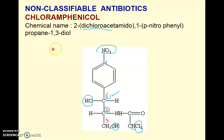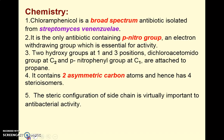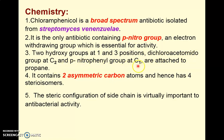Chloramphenicol is a broad-spectrum antibiotic isolated from Streptomyces venezuelae, which is its biological source obtained by fermentation. It is the only antibiotic containing a para-nitro group, which is an electron-withdrawing group essential for its antibacterial activity. It has two hydroxy groups at the 1 and 3 positions (1,3-diol), a dichloroacetamido group at C2, and a para-nitrophenyl group at C1.